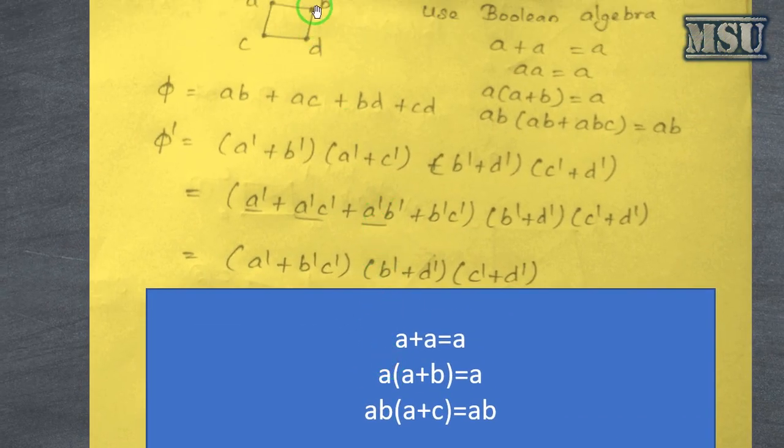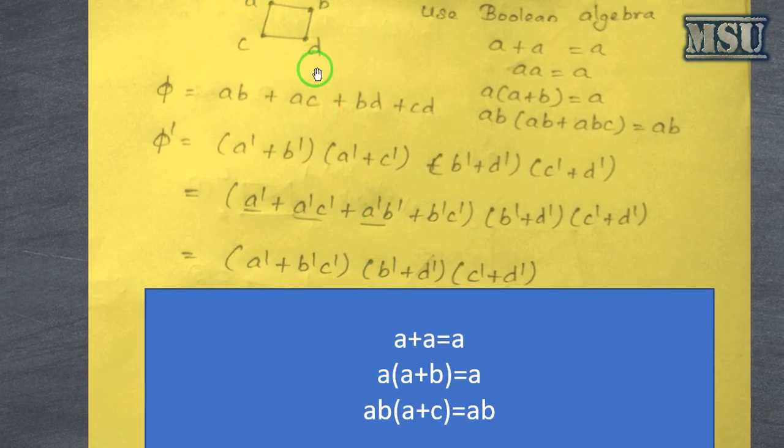So if we consider this, b and c is not connected, a and d is also not connected.